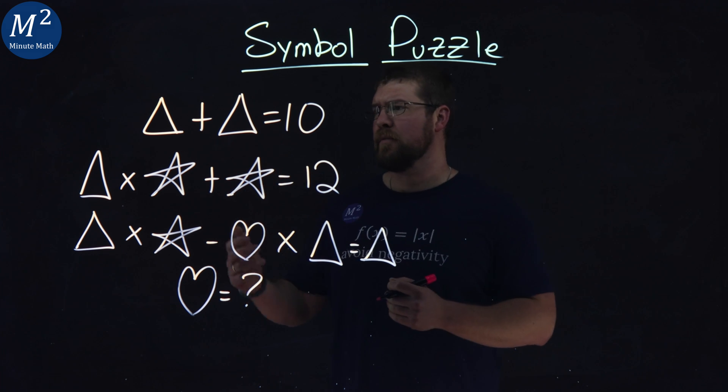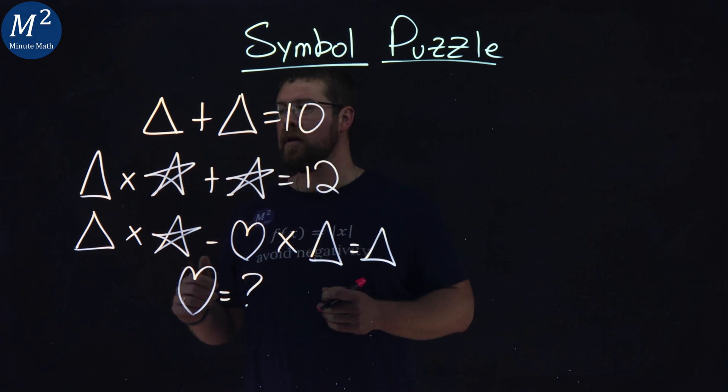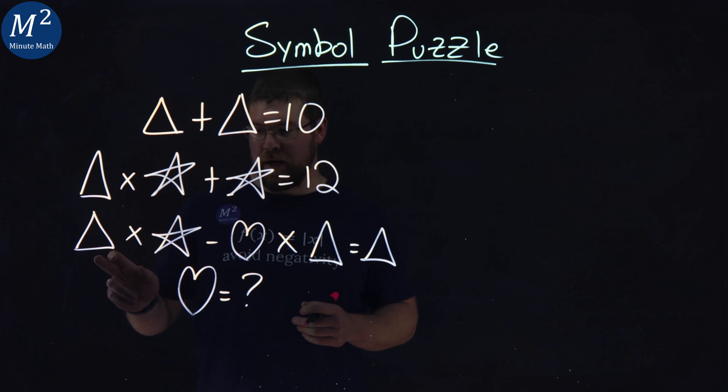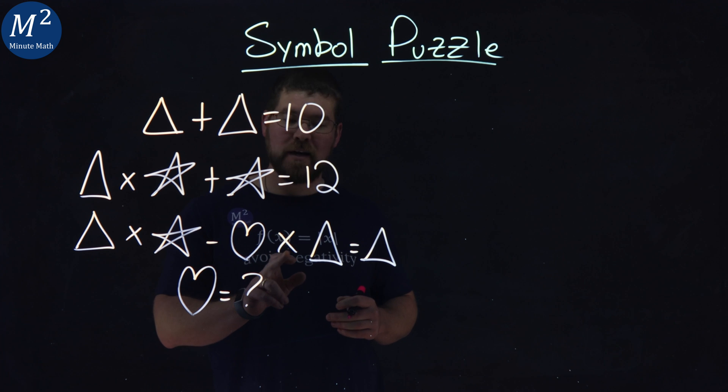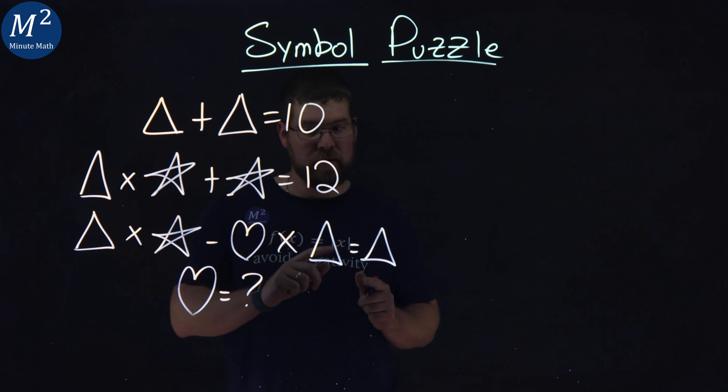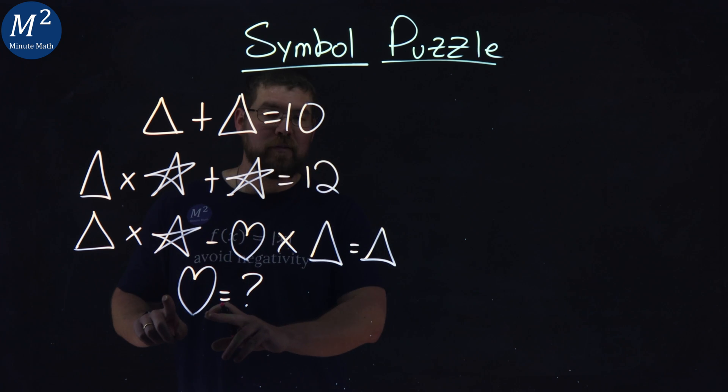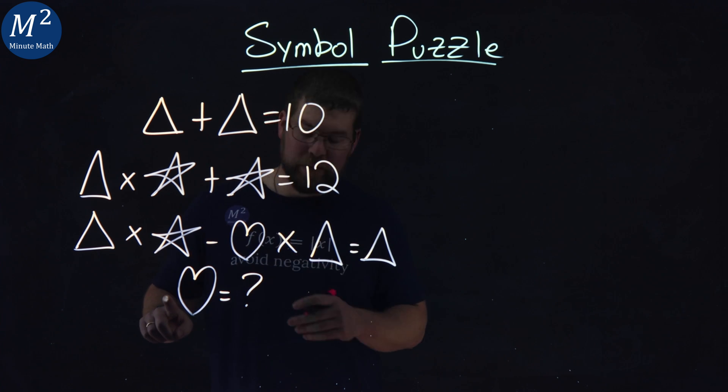Our symbol puzzle is this: triangle plus triangle equals 10, triangle times star plus star equals 12, triangle times star minus heart times triangle equals triangle. We want to figure out what a heart is. And before the comment section goes crazy, yes, my hearts are horrible. I know it.